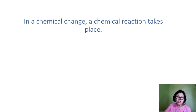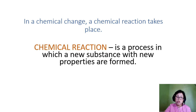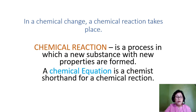Now we will focus our attention on the chemical change. In a chemical change, a chemical reaction takes place. A chemical reaction is a process in which new substances with new properties are formed. To write a chemical reaction, chemists use a chemical equation — it's a shorthand for writing chemical reactions. In a chemical reaction, there is a need to form new products or new substances.